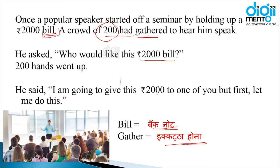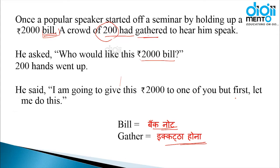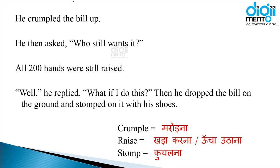He said, 'I am going to give this 2000 rupees to one of you. But first, let me do this.' उसने कहा — ये मैं तुमको दूँगा लेकिन उससे पहले आप मुझे कुछ और करने दो। He crumpled the bill up. He then asked, 'Who still wants it?'